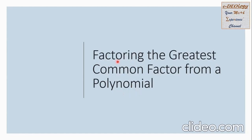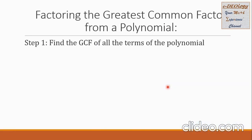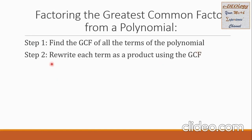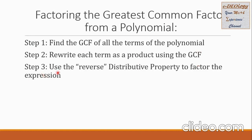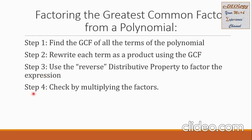Let us discuss now factoring the greatest common factor from a polynomial. We are going to follow some steps. Step 1: find the GCF of all the terms of the polynomial. Step 2: rewrite each term as a product using the GCF. Step 3: use the reverse distributive property to factor the expression. Step 4: check by multiplying the factors.